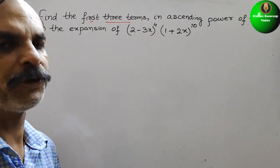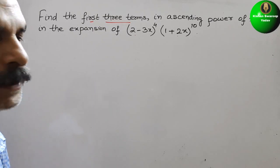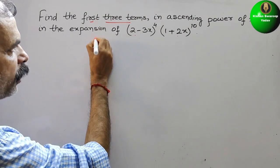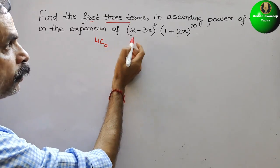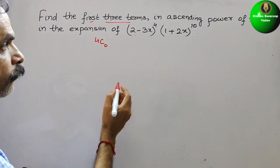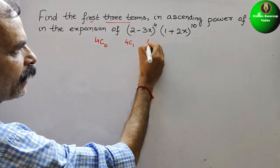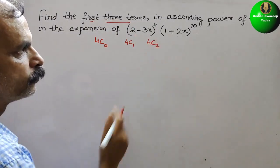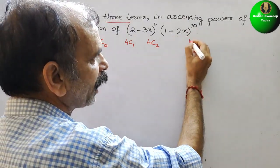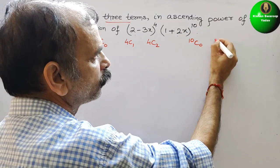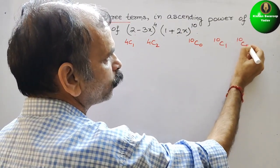First we will write the coefficients. The coefficients for (2 - 3x)^4 are 4C0, 4C1, and 4C2. And the three coefficients for (1 + 2x)^10 are 10C0, 10C1, and 10C2.